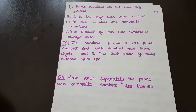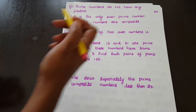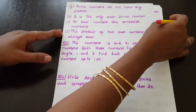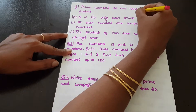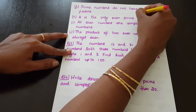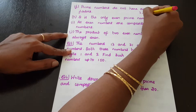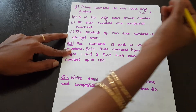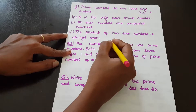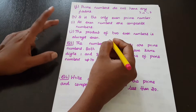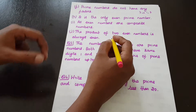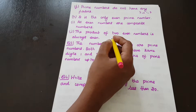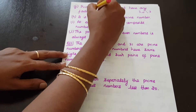Next statement: Prime numbers do not have any factors. For example, the prime number 3 has factors 1 and 3. So prime numbers do have factors — 1 and the number itself. Therefore, the statement is false.